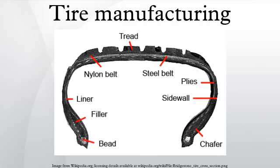Beads: Beads are strands of high tensile strength steel wire encased in a rubber compound. Bead wire is coated with special alloys of bronze or brass to protect the steel from corrosion. Copper in the alloy and sulfur in the rubber cross-link to produce copper sulfide, which improves bonding of the bead to the rubber. Beads are inflexible and inelastic, and provide the mechanical strength to fit the tire to the wheel. Bead rubber includes additives to maximize strength and toughness.